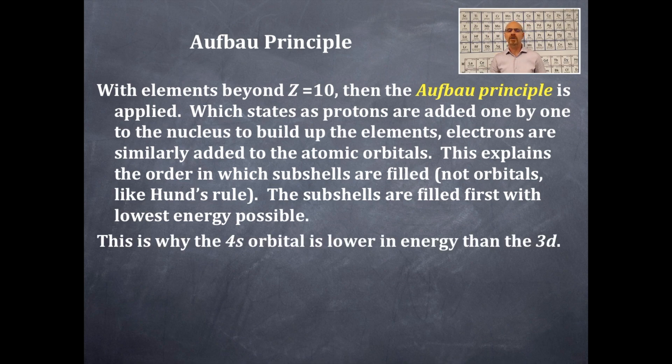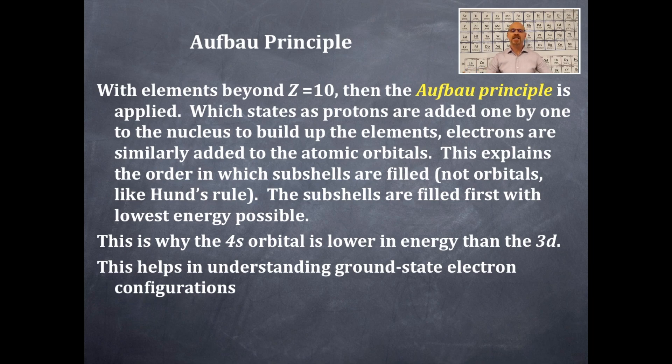That is why the 4s orbital is lower in energy than the 3d. This helps in understanding ground state electron configurations.